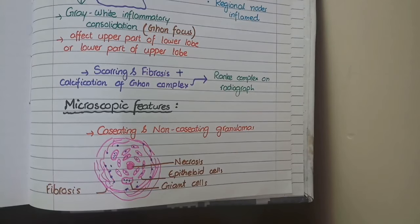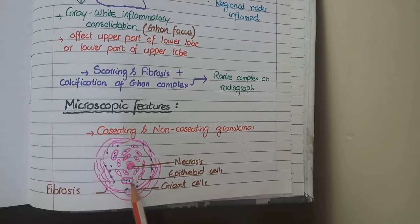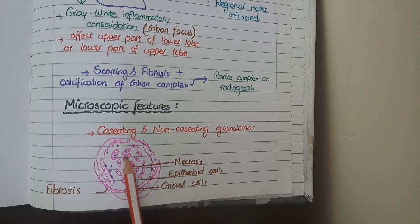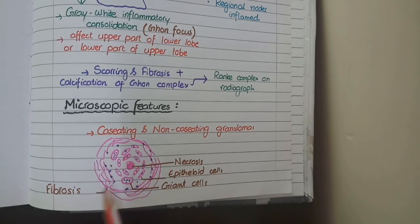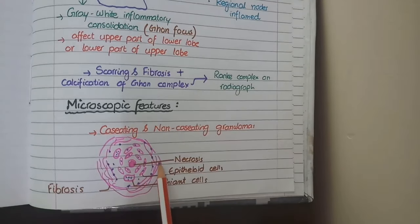So here in this diagram is a picture of caseating granuloma. This is a central necrotic area. Surrounding this is a mixture of epithelioid cells and giant cells. Surrounding it is a zone of lymphocytes, and in the outermost region there is a ring of fibrosis.